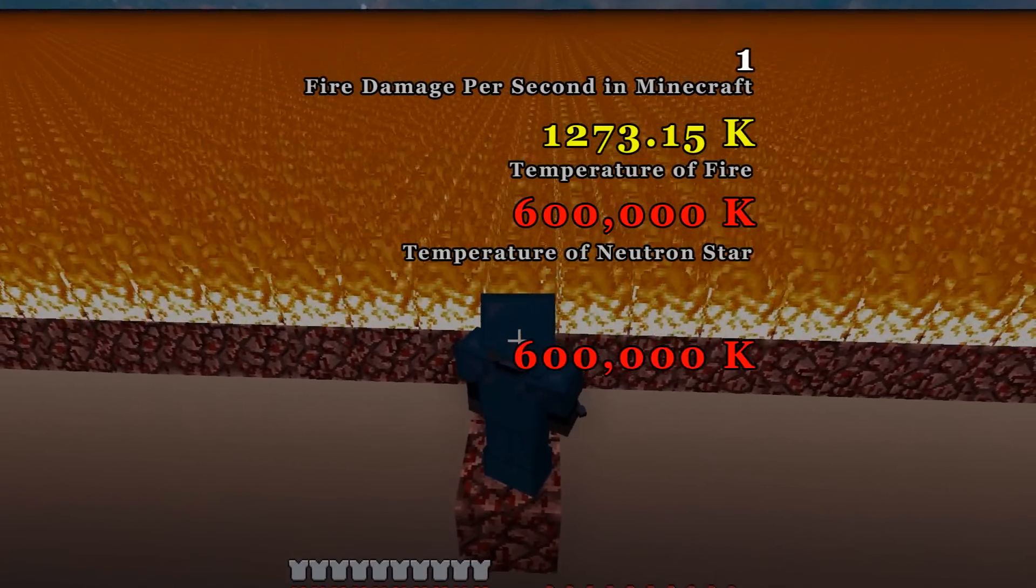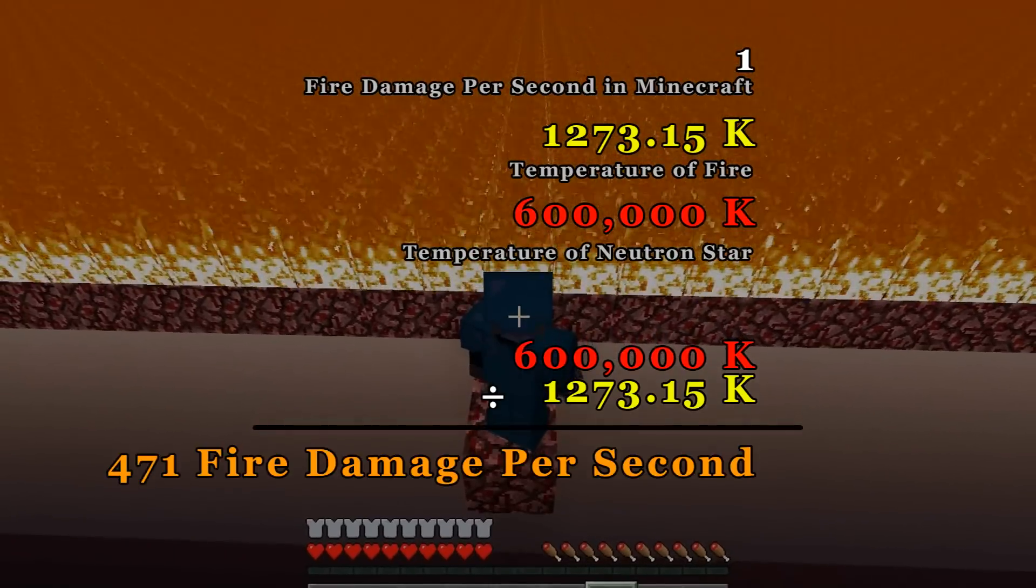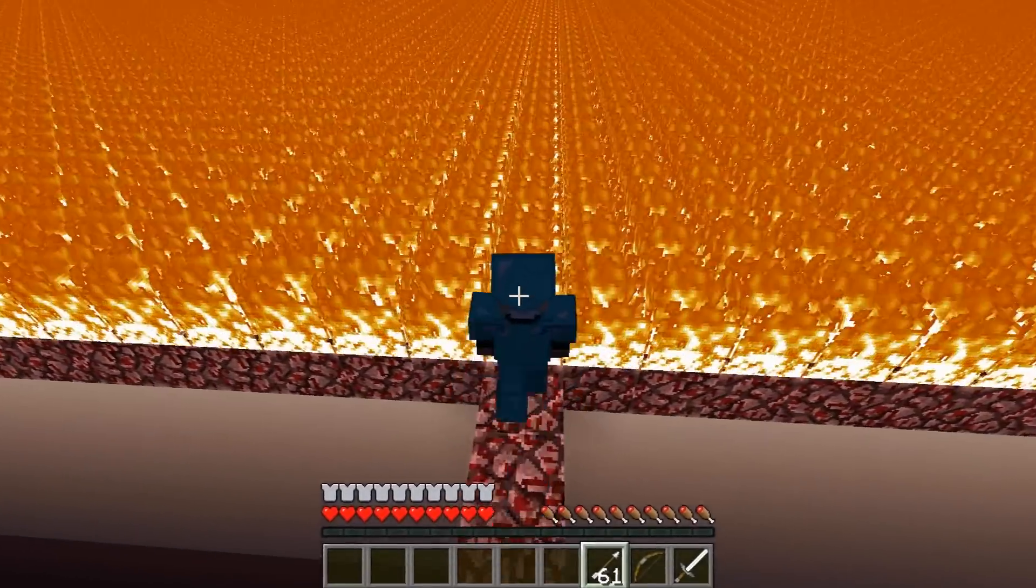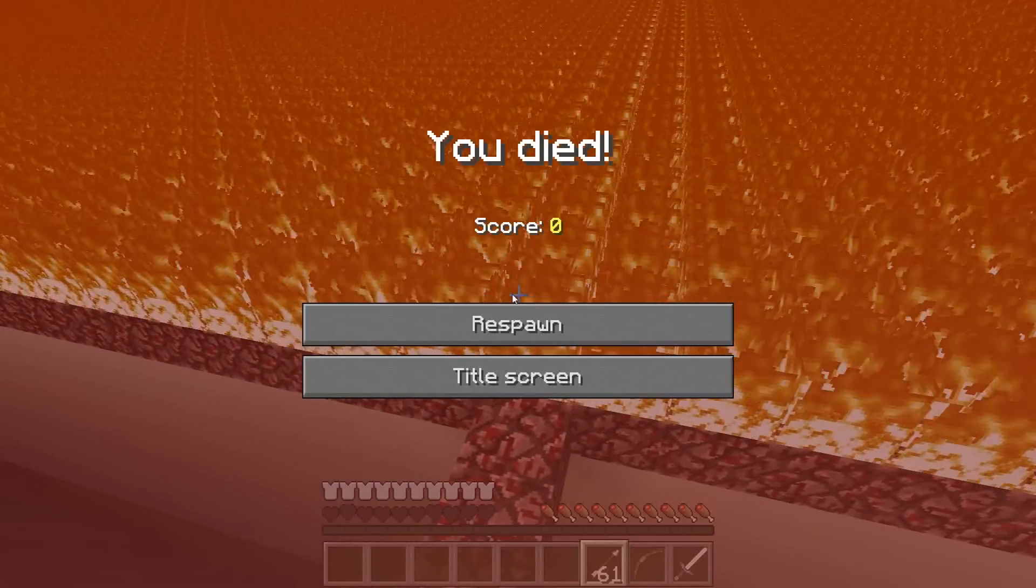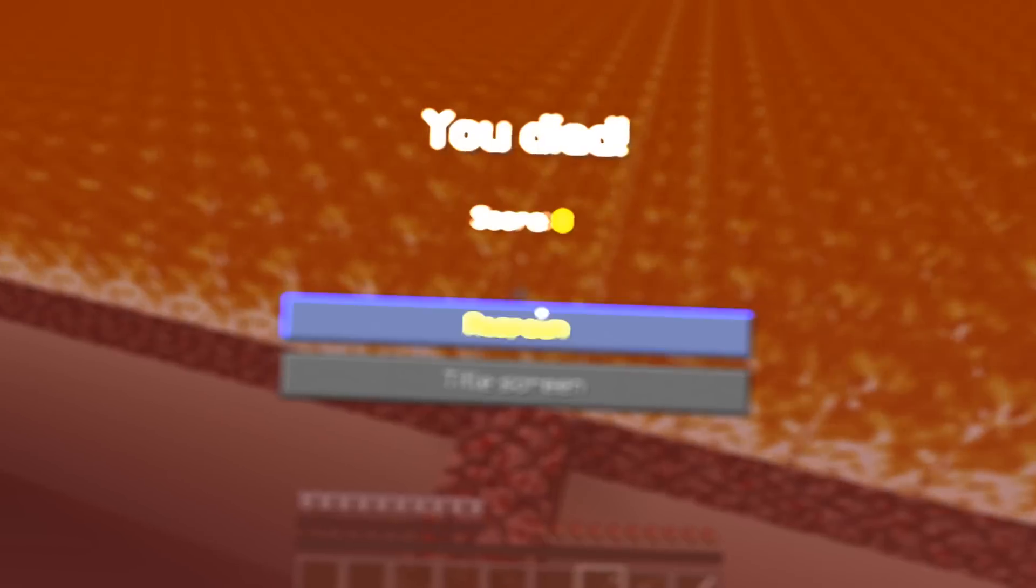And while there would be no fire as we know it on the surface of a neutron star, the fire in our Minecraft world burns 471 times hotter than normal, which represents a surface temperature of 600,000 Kelvin.